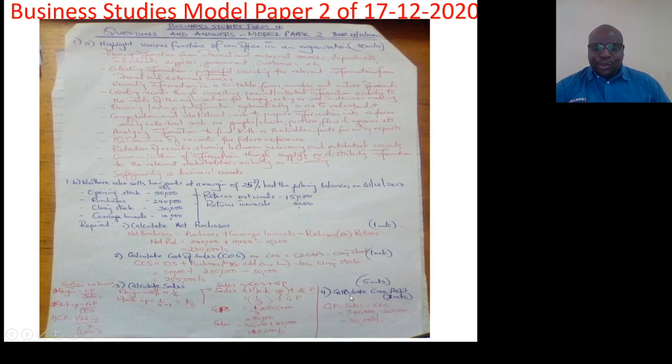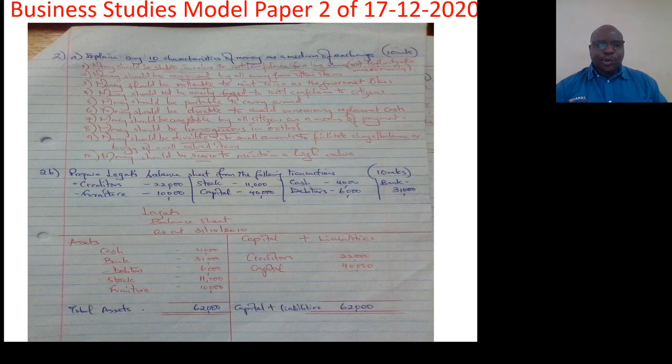Then we are told to calculate gross profit. Gross profit is sales minus cost of sales which will be 340,000 minus 255,000 which gives us 85,000 shillings. We move to question number 2.